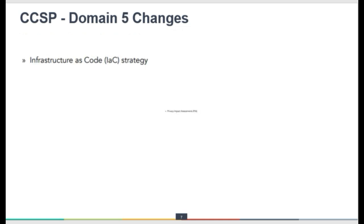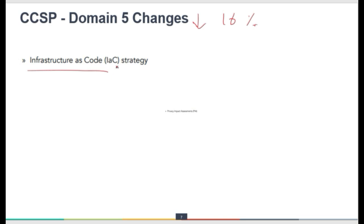For domain 5 of the CCSP, the weightage has been reduced by 1 percent, from 17 percent to 16 percent. However, one new topic is being added here: infrastructure as code strategy. IAC strategy is a new topic for domain 5.